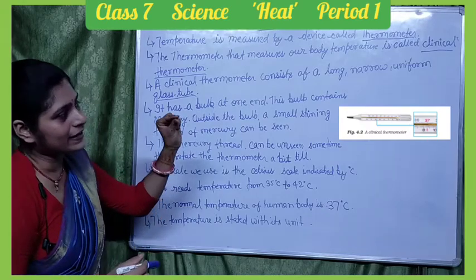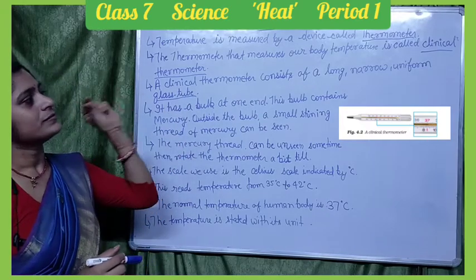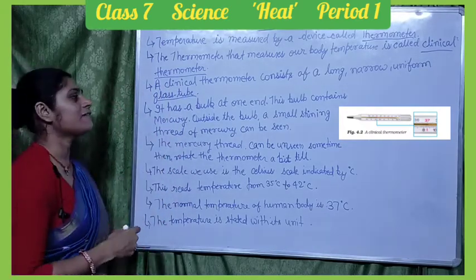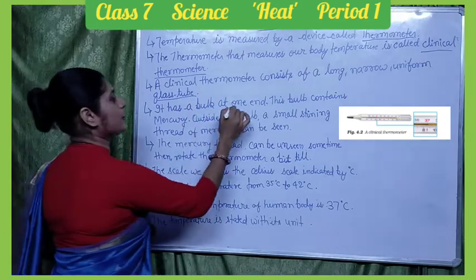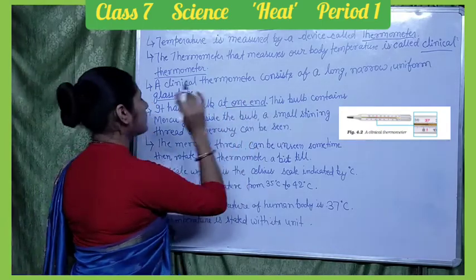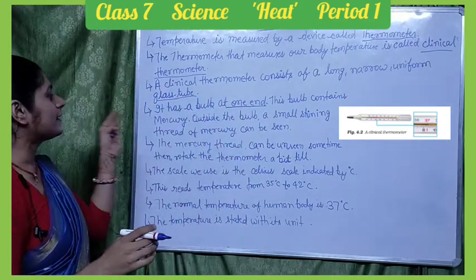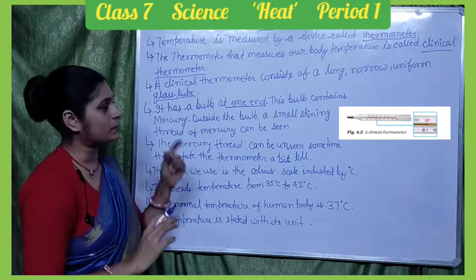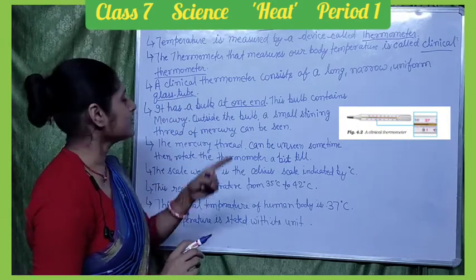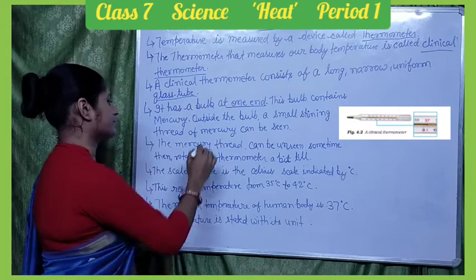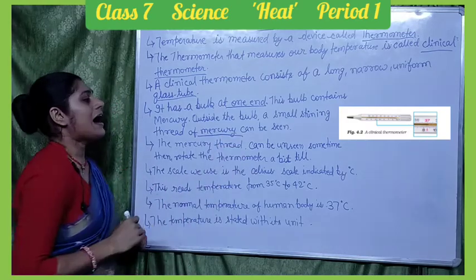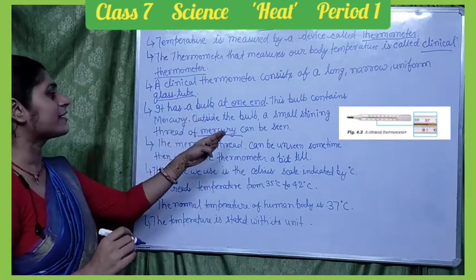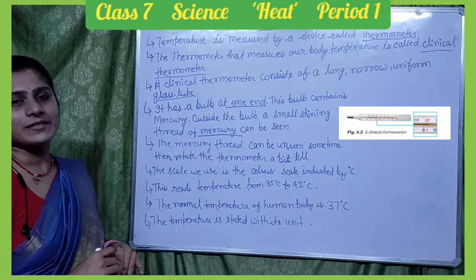The clinical thermometer has a bulb at one end. This bulb contains mercury. Outside the bulb, a small shining thread of mercury can be seen along the glass tube.